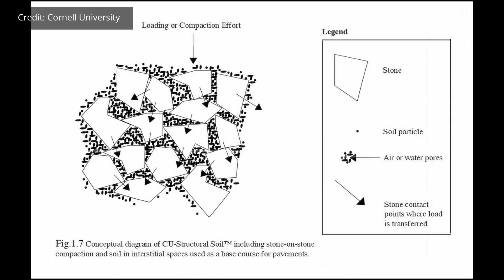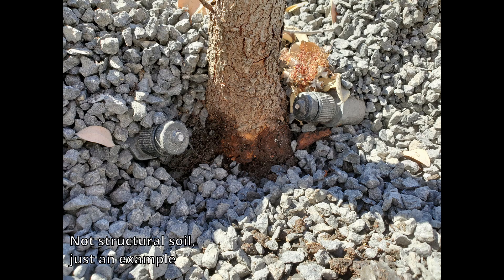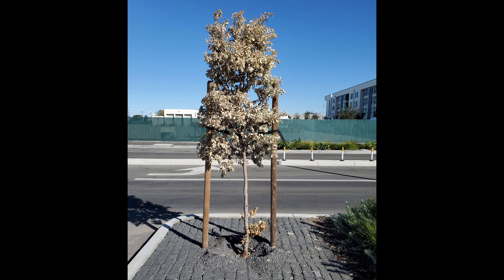The way this works is that the rock is angular, so it doesn't compact together fully. In between the rocks are voids where the soil hangs around, so the soil itself doesn't get compacted. The roots can also grow through these voids, and there will be air in them as well. There are a few important caveats: you also need good drainage, and the trees must be irrigated because there's not a lot of soil in the mix. If the irrigation system fails, the trees will die.